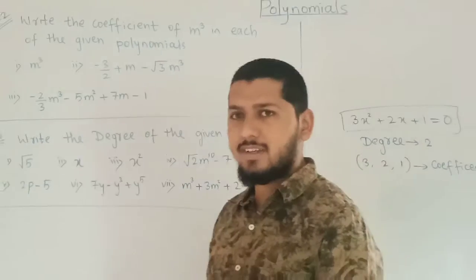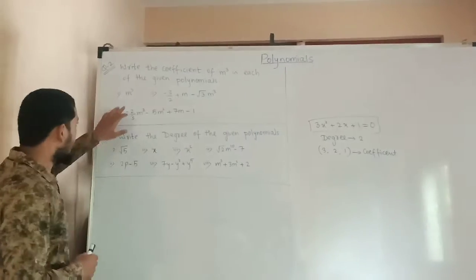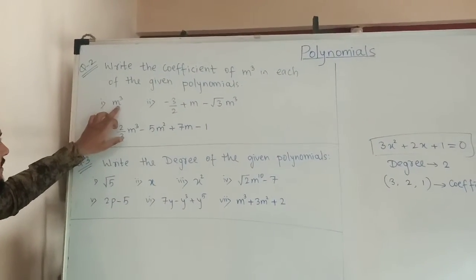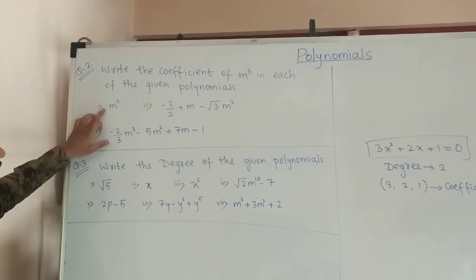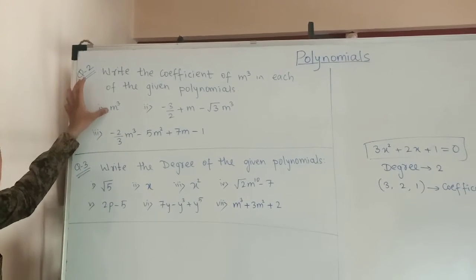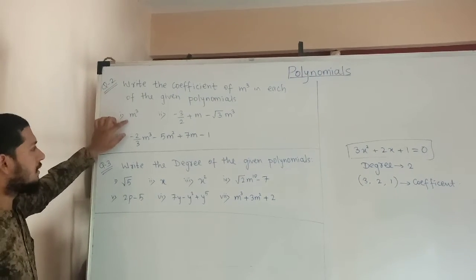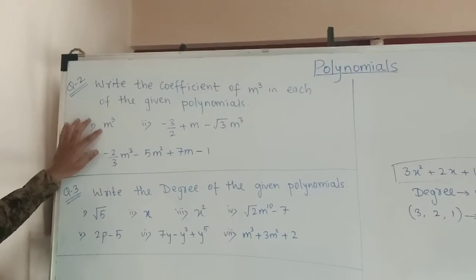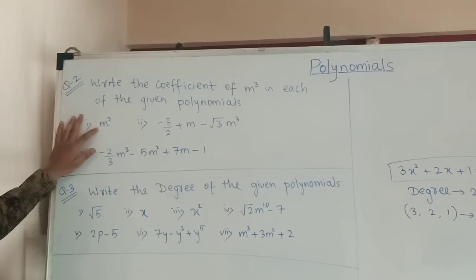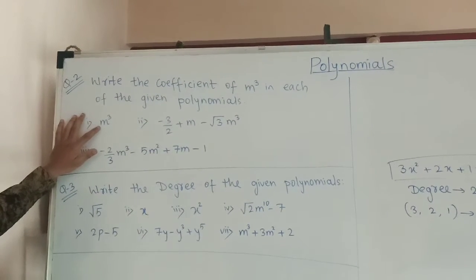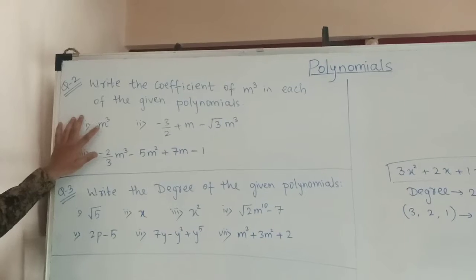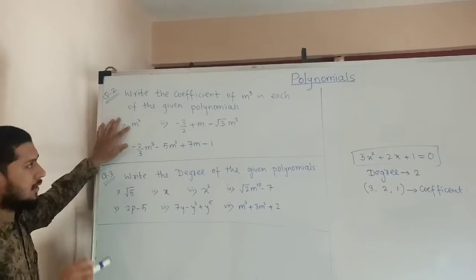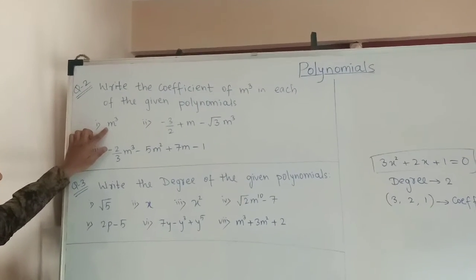In the first example, it is written n cubed only. In n cubed you are not getting any multiple number — there is no number visible as a multiplier. So if there is no number multiplying the variable, we write 1. The coefficient of n cubed here is 1.